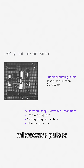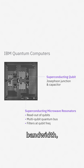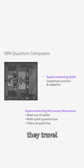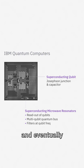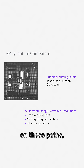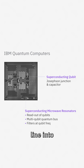We call them microwave pulses because they all fit within the microwave frequency bandwidth, which is around 1 gigahertz. After the room temperature control boxes create the pulses, they travel through the cables, into the dilution refrigerator, and eventually to our quantum chip. The signal goes into the resonators through a wire bond on these paths, and then it flows down the transmission line into our qubits.